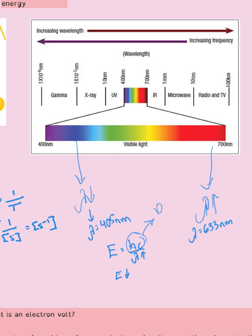A useful way to remember the EM spectrum order is RMIVUXG — remembering that red is on one side and violet on the other, with radio waves having the largest wavelength. If radio has the largest wavelength, its frequency is the lowest. On the opposite side, you have the smallest wavelength and highest frequency. Focus on one and work out the others from there.